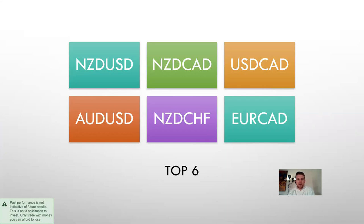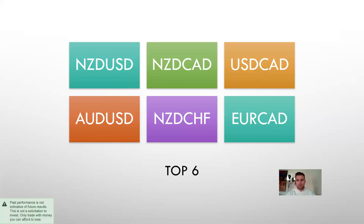The six pairs I'm going to run — though it really depends on your account size, and if you have a small account run the more conservative pairs — are NZD/USD, NZD/CAD, USD/CAD, AUD/USD, NZD/CHF, and EUR/CAD. Those are the ones I'm going to be looking to run based on the settings I'm currently using. I can send you the Excel sheets and my FX Blue account so you can determine what you think is best, but I'm just here to tell you what I'm personally doing.